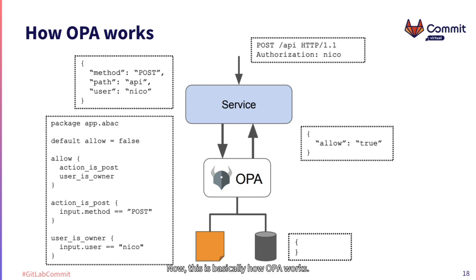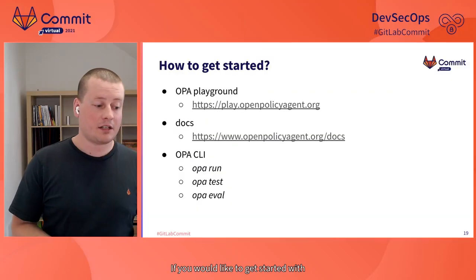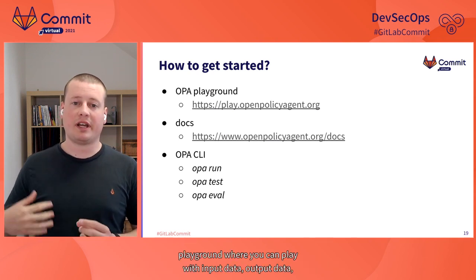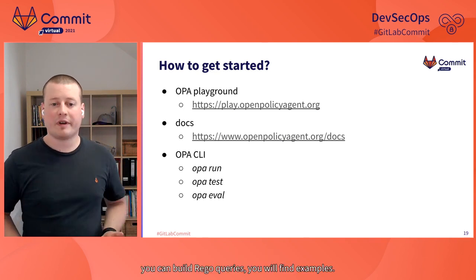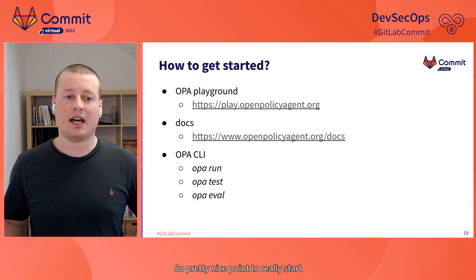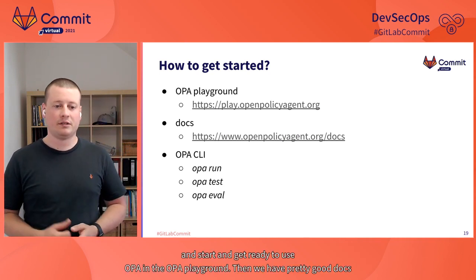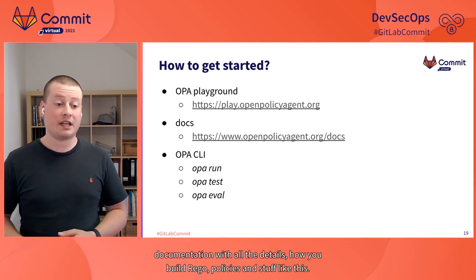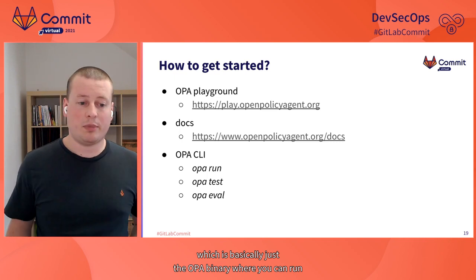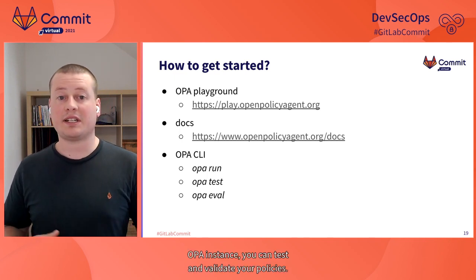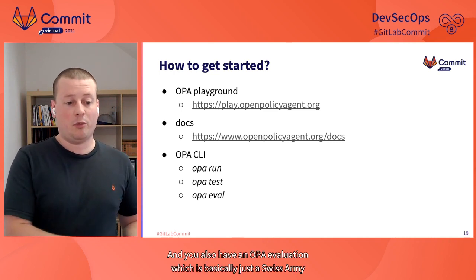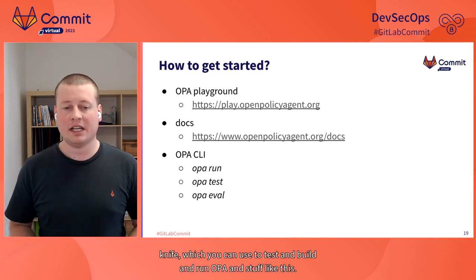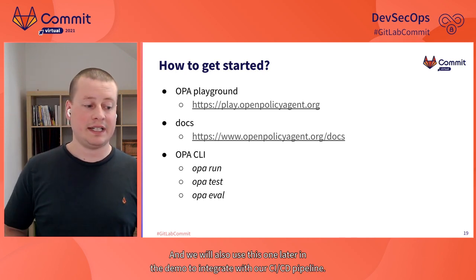If you'd like to get started with OPA, you have multiple options. First, there's a browser-based playground where you can play with input data, output data, and build Rego queries — a great starting point. There's also good documentation with all the details on building Rego policies. And of course there's the OPA CLI, which is just the OPA binary where you can run an OPA instance, test and validate your policies, and there's an OPA eval command — basically a Swiss Army knife — which we'll also use in the demo to integrate with our CI/CD pipeline.